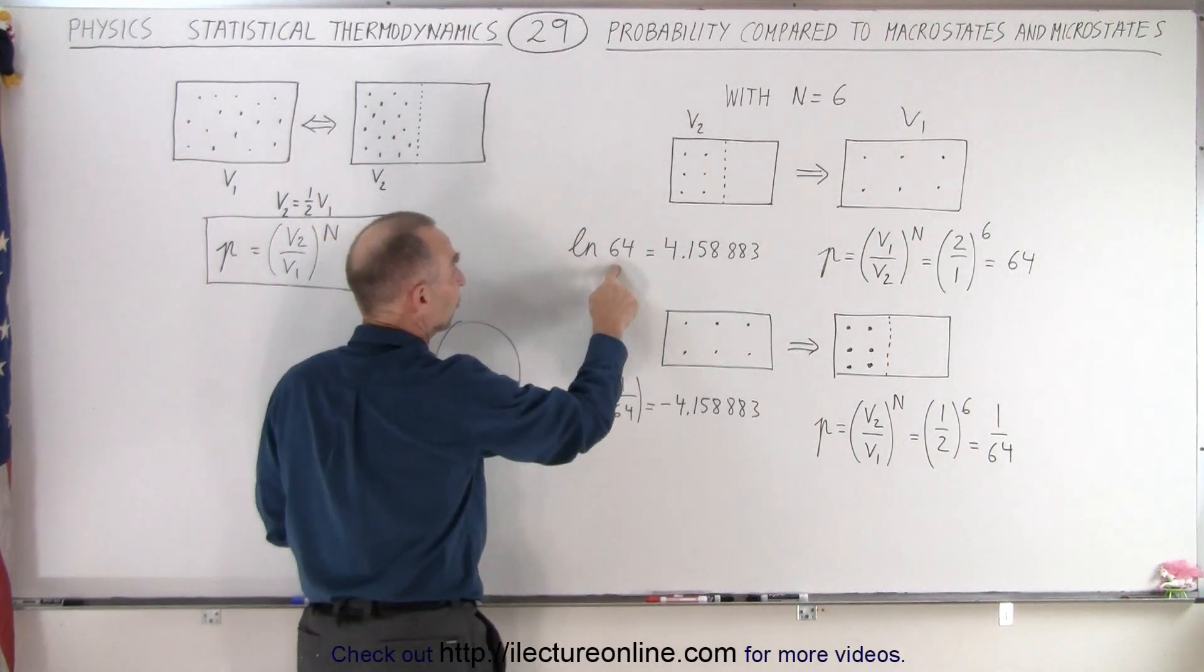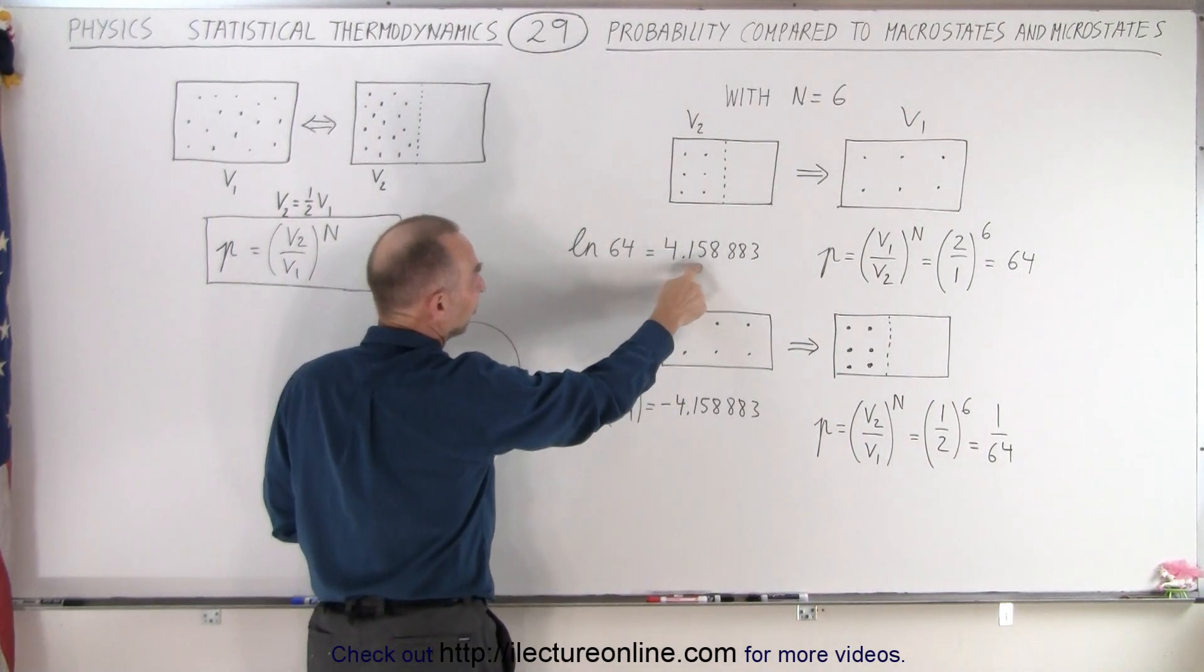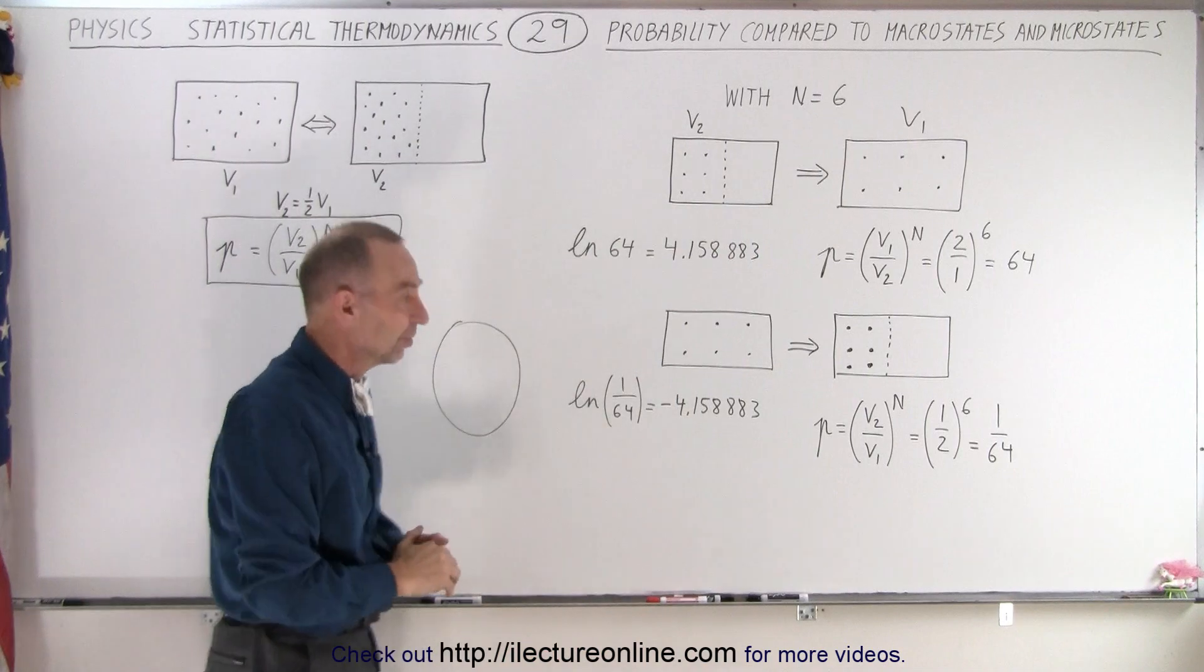Now, if we take the natural log of 64, we get 4.15883, at least to six decimal places.